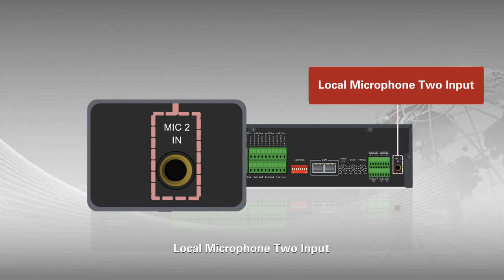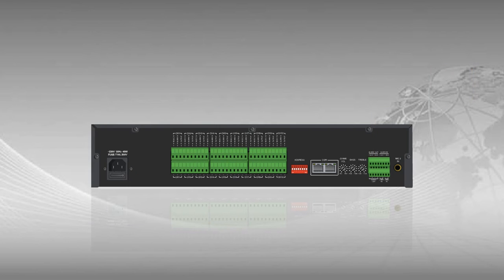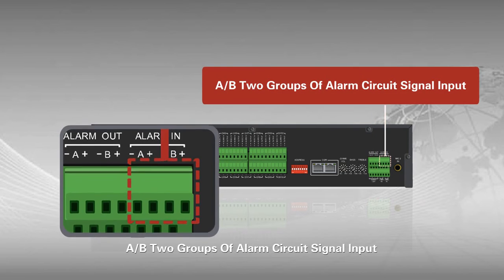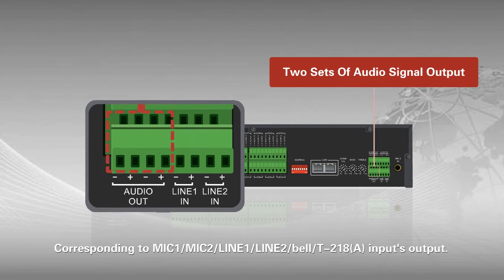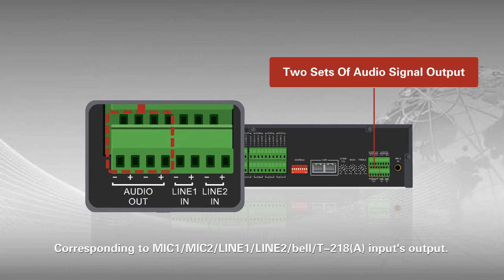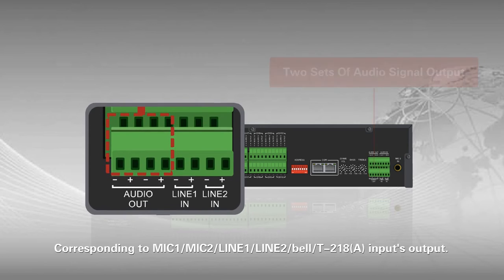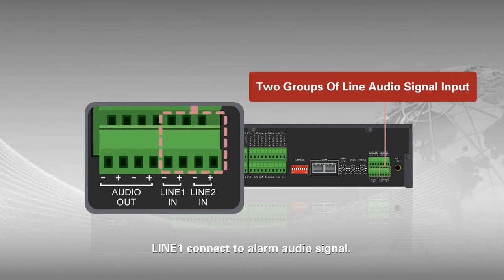Local microphone 2 inputs. A and B — two groups of alarm short-circuit signal outputs. A and B — two groups of alarm short-circuit audio signal inputs. Two sets of audio signal outputs corresponding to mic 1, mic 2, line 1, line 2, bell, T-218A inputs and outputs. Two groups of 9 audio signal inputs; line 1 connected to alarm audio signal.